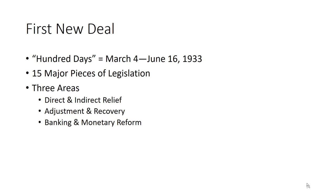Adjustment and recovery programs included the first Agricultural Adjustment Act and the National Industrial Recovery Act. It was the Supreme Court's 1935 declaration that the National Industrial Recovery Act was unconstitutional that separates the first from the second New Deal. The last major body of legislation in the Hundred Days concerned banking and monetary reform. The US abandoned the gold standard on April 19, 1933, which immediately inflated the currency helping debtors. The Federal Securities Act and the Glass-Steagall Act put the brakes on unfettered risk in the stock market and banking sectors. The Home Owners Loan Act and the Farm Credit Act established the now-familiar standard of a 30-year mortgage.